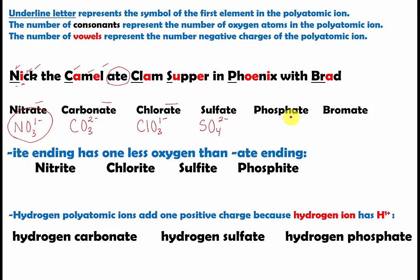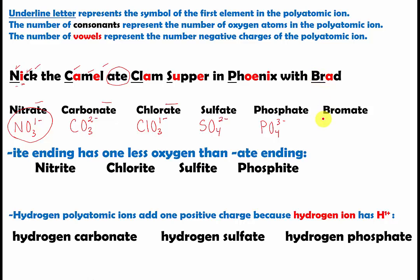For 'Phoenix,' it's phosphate. P is underlined for phosphorus. There are one, two, three, four consonants, so four oxygen atoms. And there are three vowels, so it's three minus — PO4 three minus. For 'Brad,' it's bromate. Br is underlined for bromine. There are three consonants, giving three oxygen atoms, and one vowel, so it's one minus — BrO3 one minus.